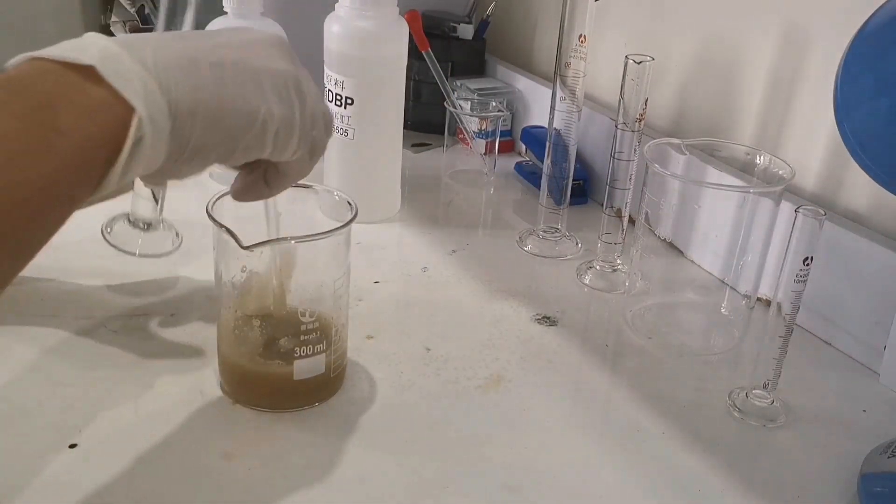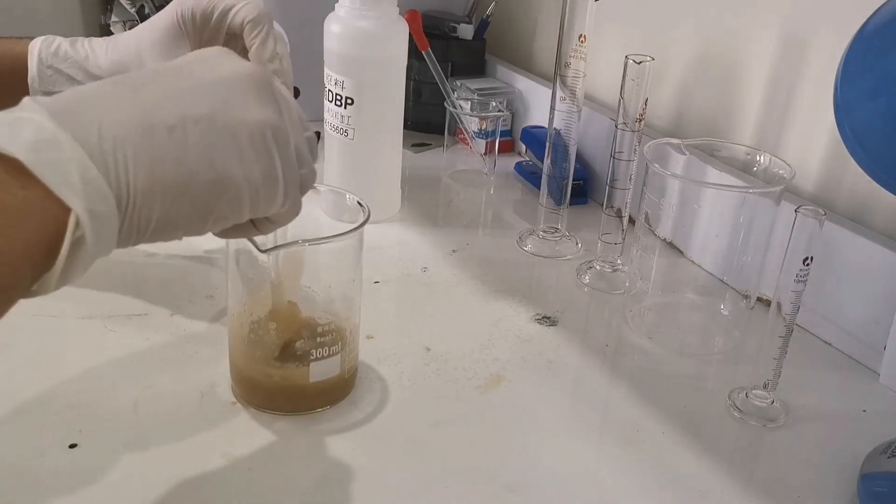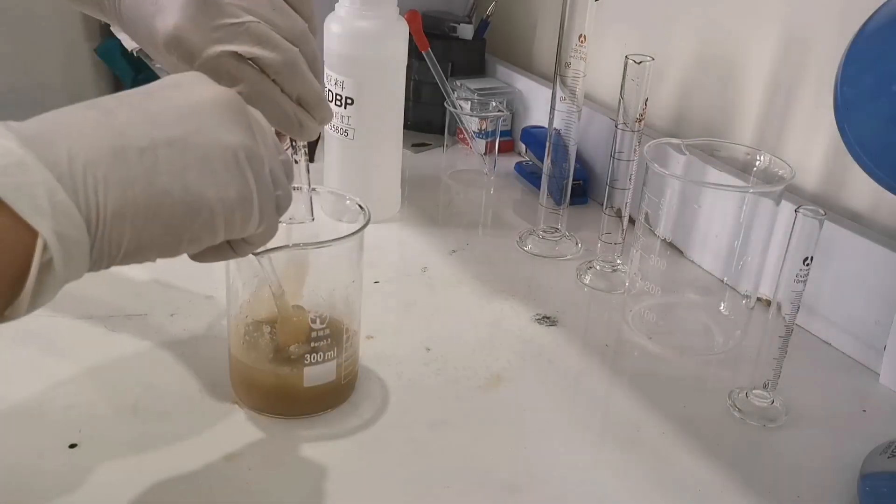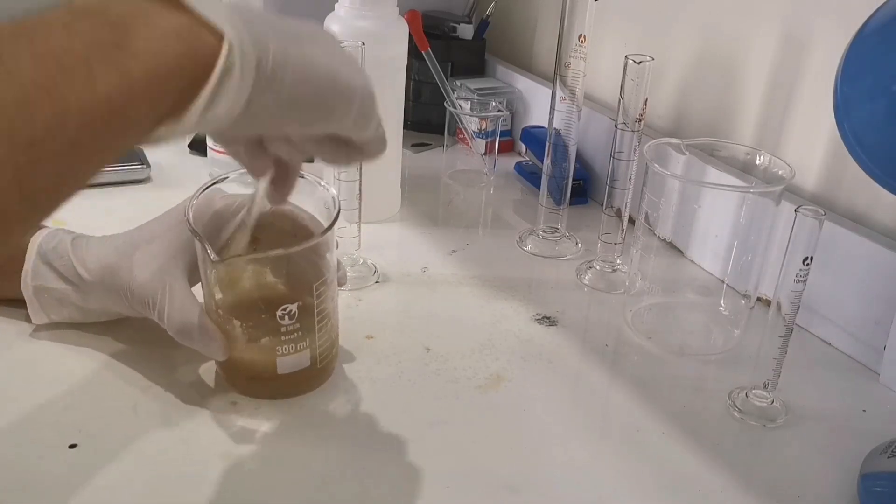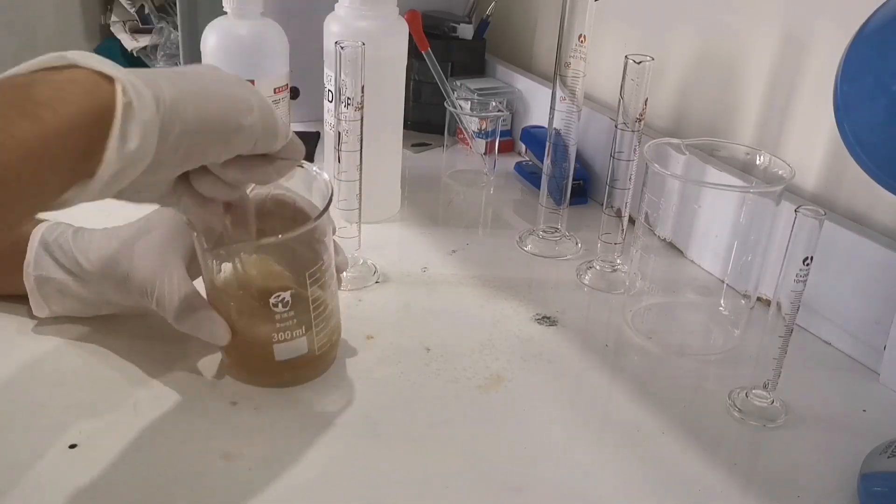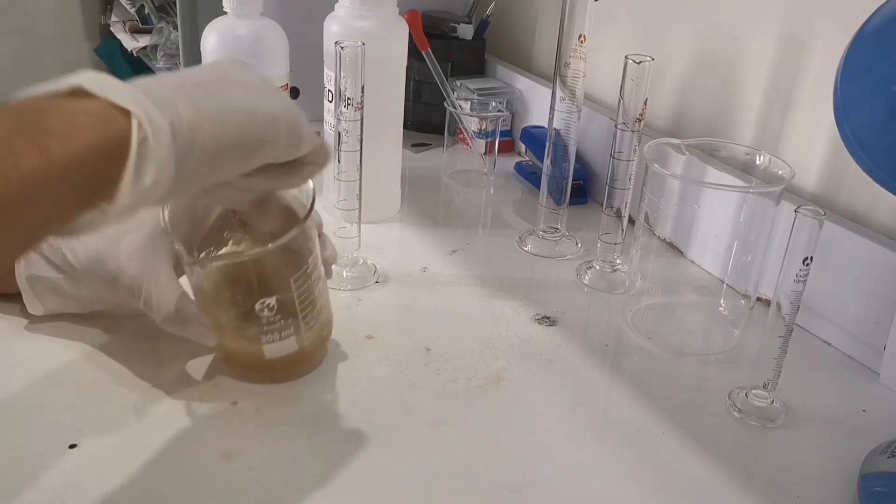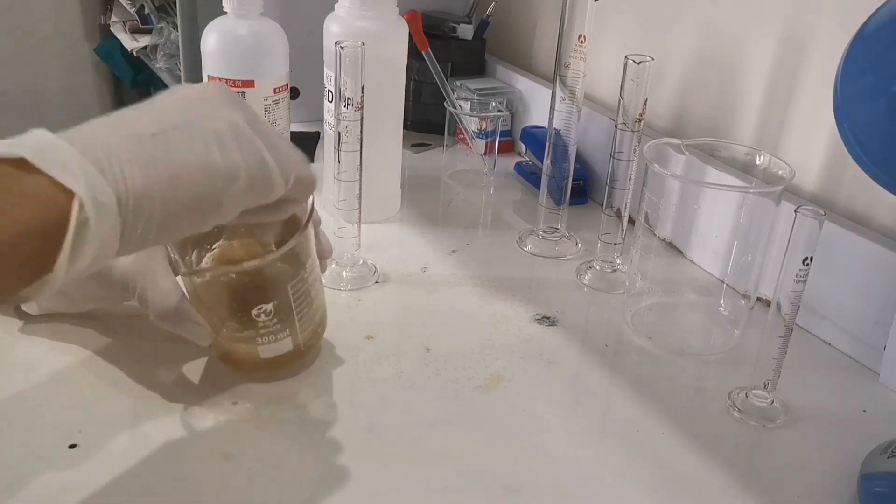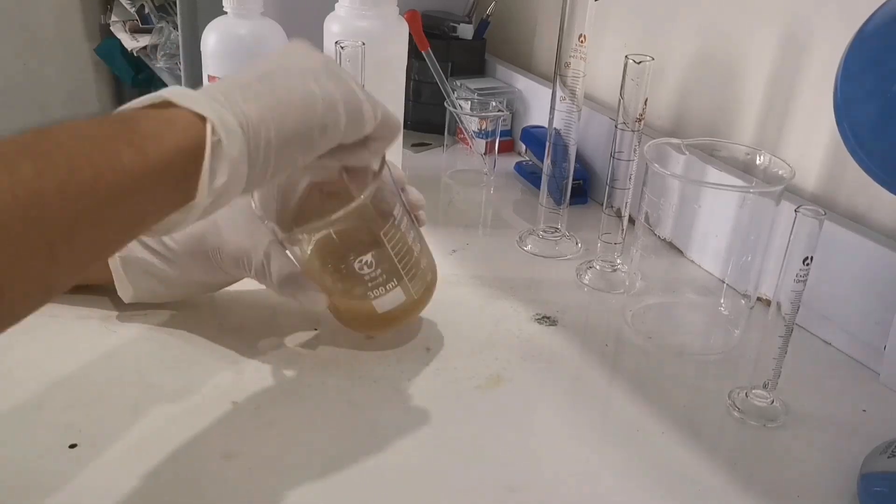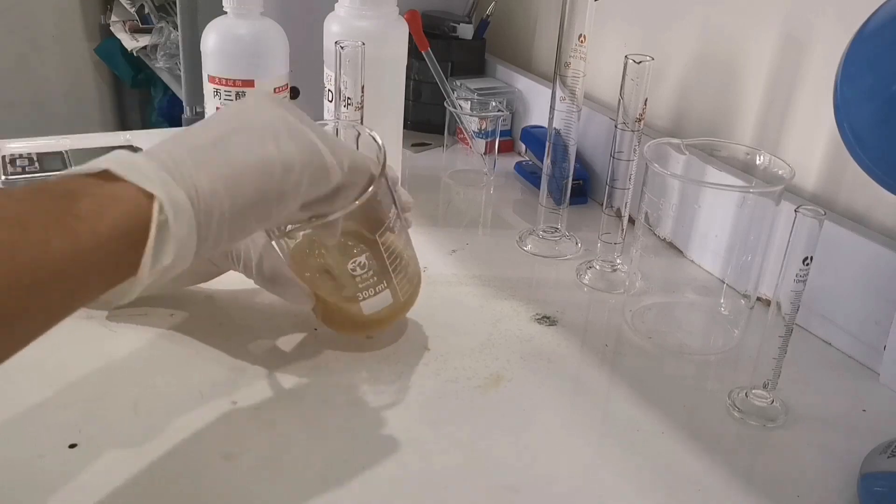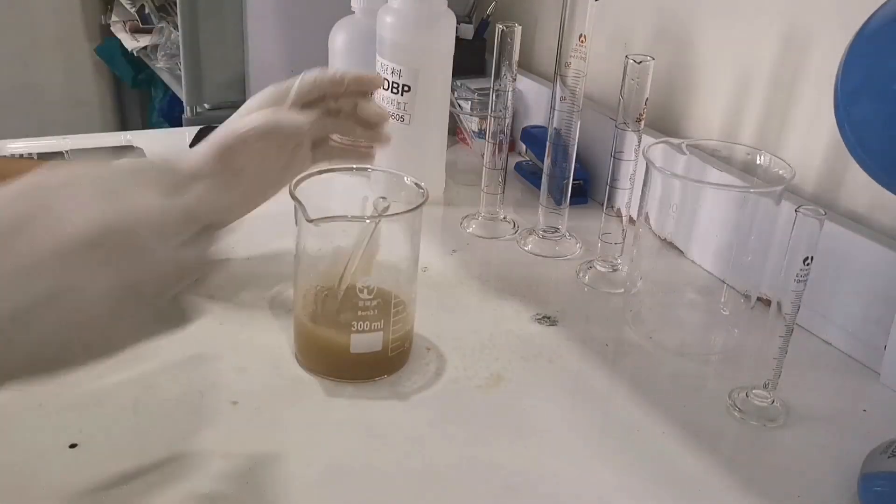Now we add our DBP into the beaker and give it a good stir. Like before, when you first add the DBP, the solution will get softer again. But after a good stirring, the solution will get hard again.